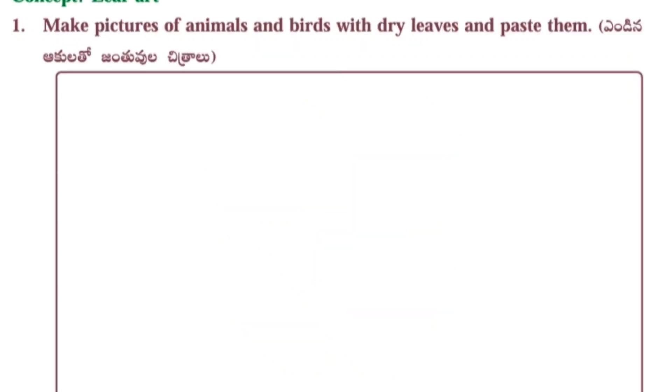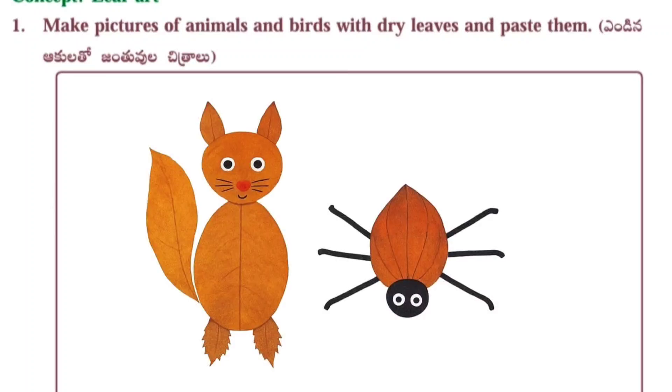Next: Make pictures of animals and birds with dry leaves and paste them. Here students have to collect some leaves and dry them, then they have to paste here like animals and birds shapes.